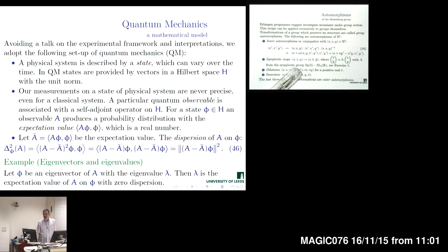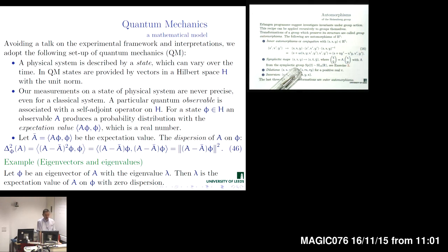We are going to discuss applications of the Heisenberg group to quantum mechanics. We not only have useful techniques, but on every step we will see a connection with mathematical theory — the theory of certain operators in the Hilbert space related to quantum mechanical models. It is practically very difficult to separate where we have a physical application of the Heisenberg group and where we are seeing pure mathematical results. We are so closely intertwined in this field.